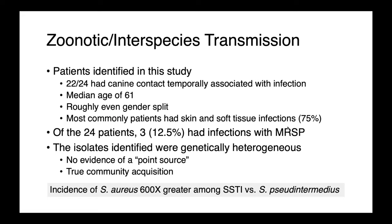Looking at the patient population, there was a median age of 61 and a roughly even gender split. Most of these infections — about three quarters — were skin and soft tissue infections and tended to be more superficial. Only three out of 24, so one eighth of these infections, were methicillin-resistant. Infections with methicillin-susceptible staph pseudintermedius were much more common. The isolates identified were genetically heterogeneous — they were all different from each other, unrelated.